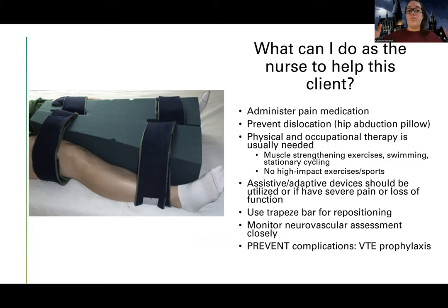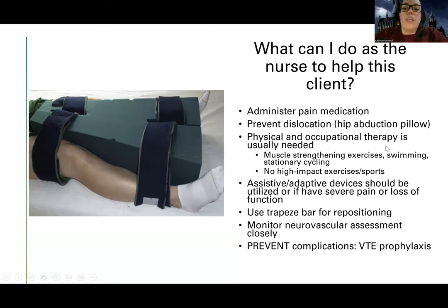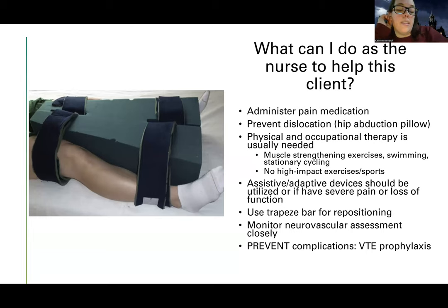We'll talk about all the precautions shortly, but one key thing is not crossing the legs — crossing can pop that new hip out of place. They usually need physical and occupational therapy, doing things like muscle strengthening, sometimes swimming, stationary cycling, or just walking. No high-impact sports, just gentle general exercise. They may also need assistive and adaptive devices to help with activities of daily living, since they won't be able to bend and move the same way.